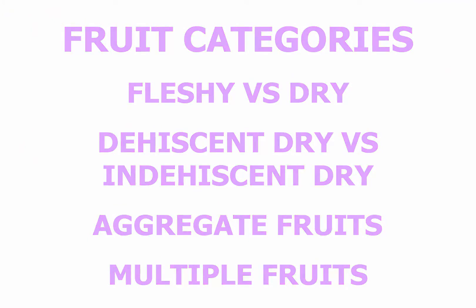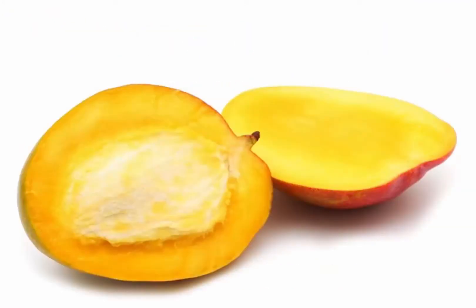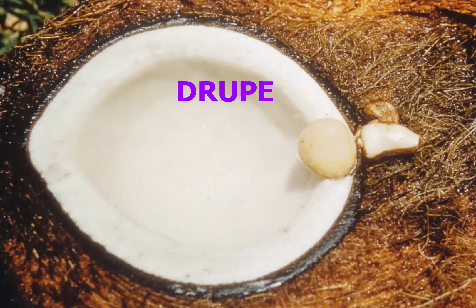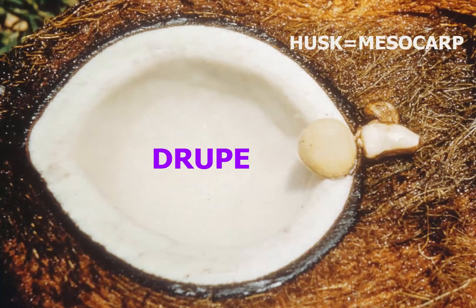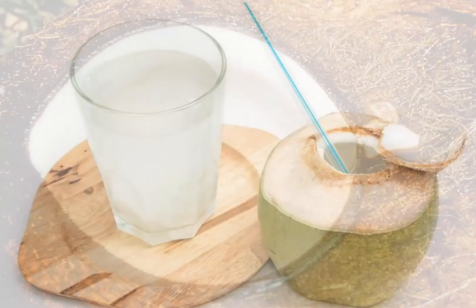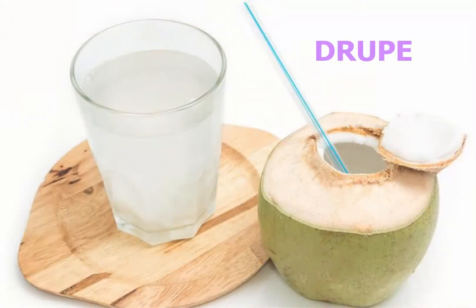Fleshy fruits have mesocarps that are partly fleshy at maturity. A drupe is a simple fleshy fruit with a single seed enclosed by a hard stony endocarp or pit. The mesocarp is not always obviously fleshy. In coconuts, for example, the husk which is usually removed before the rest of the fruit is sold in markets is very fibrous. The seed of the coconut — the meat — is hollow and contains a watery endosperm, surrounded by the thick, hard endocarp, typical of drupes.